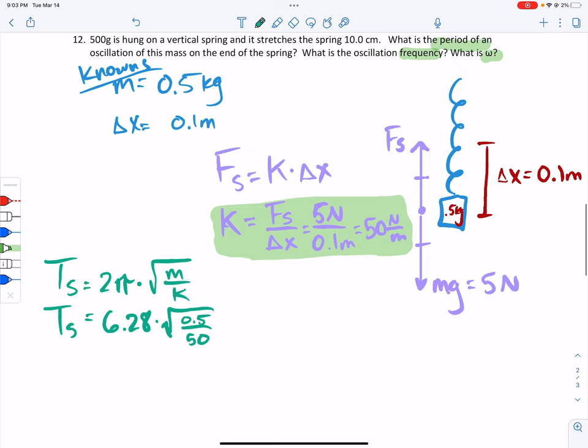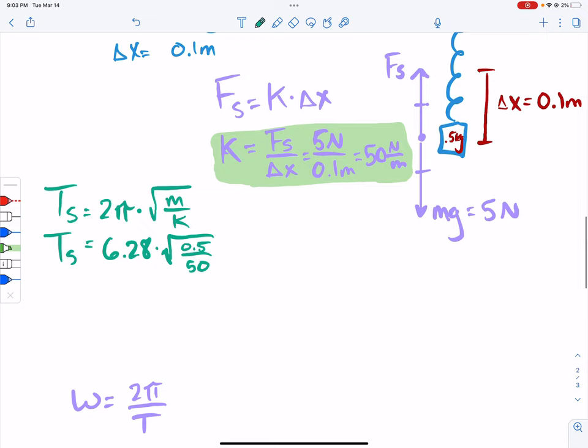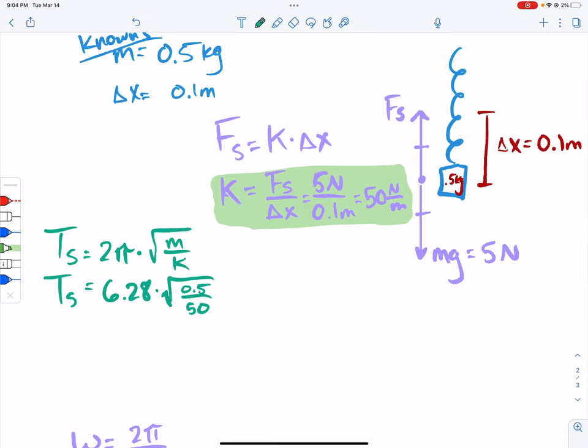And then converting that to your other values of like frequency and omega, frequency is just 1 over period. So you can solve for that one that way. And then omega is 2 pi radians over period. So the rest of the problem, I think, is pretty straightforward, just plugging the numbers in and rearranging, but the tricky part on this was to get k based on the information they gave. So I hope that helps. Let me know if you have any other questions.